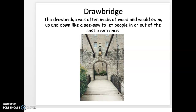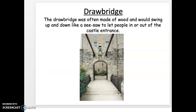The drawbridge was usually made out of wood — not stone, because stone is too heavy. It would swing up and down like a seesaw to let people in or out of the castle entrance, and this was a lever and pulley system that we're actually going to be designing for our castle design as well.